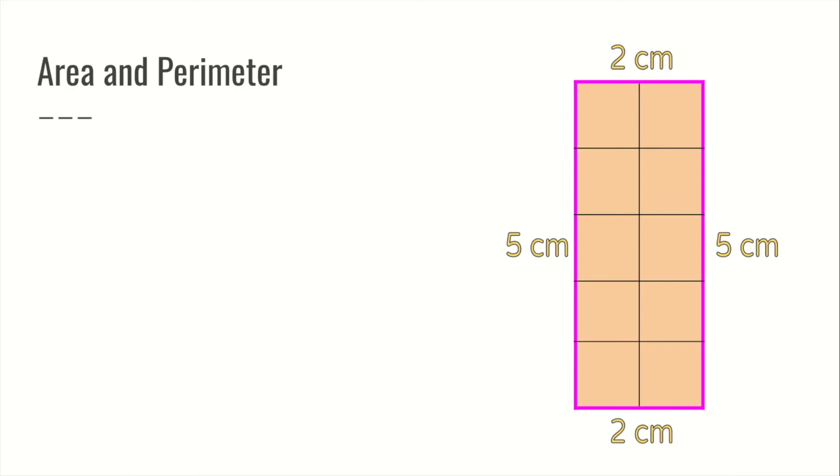And let's remember the formula first, length plus length plus width plus width. Now we're going to plug in our numbers. 5 plus 5 equals 10, plus 2 is 12, plus 2 is 14. The perimeter for this shape is 14 centimeters.